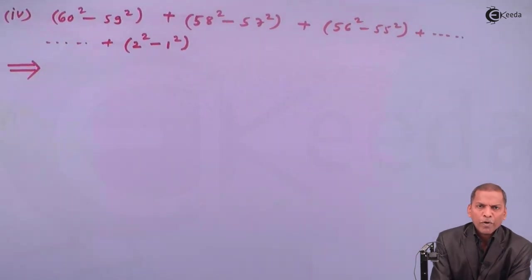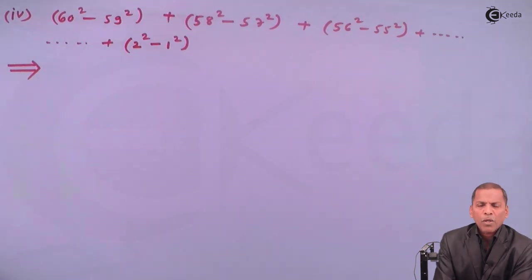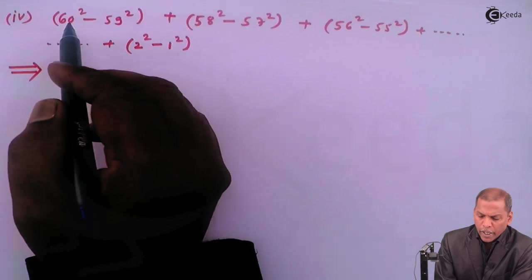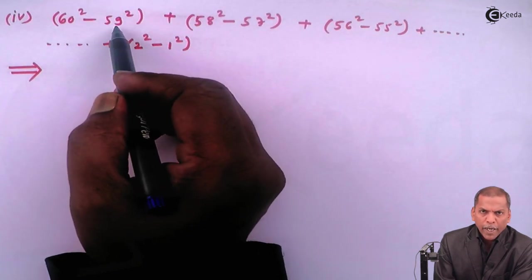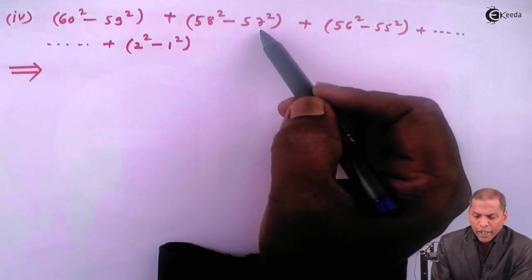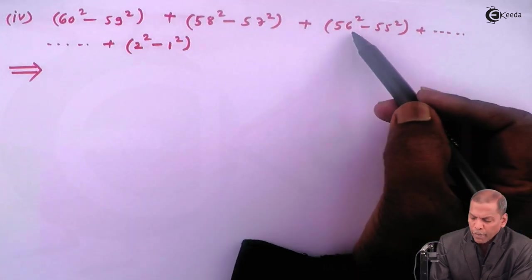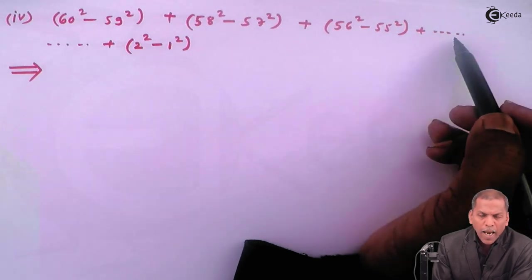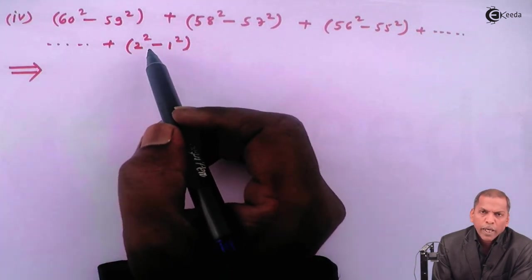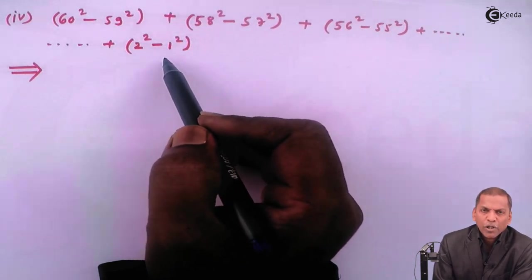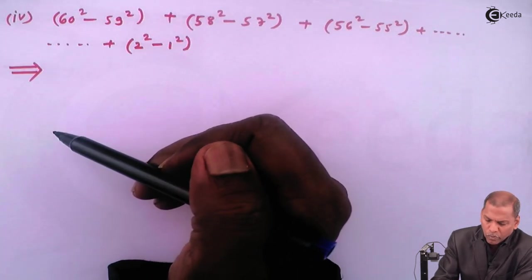Hello friends, now we see problem 1 sub-question 4, which is also based on theorem 1, theorem 2, theorem 3 of chapter Sequence and Series. The problem is: 60² minus 59² (first bracket) plus 58² minus 57² (second bracket) plus 56² minus 55² (third bracket), going on, and the last bracket is 2² minus 1² (bracket complete). For this question we have to find the sum.